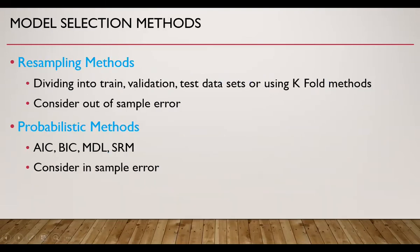There are two types of model selection methods. One is resampling method; the other is probabilistic methods. In resampling method, data is divided into train, validation, and test data set, or we use cross-validation techniques by k-fold or variations of k-fold. Resampling methods are considered out-of-sample error because the error is calculated from the left-out or test data set.